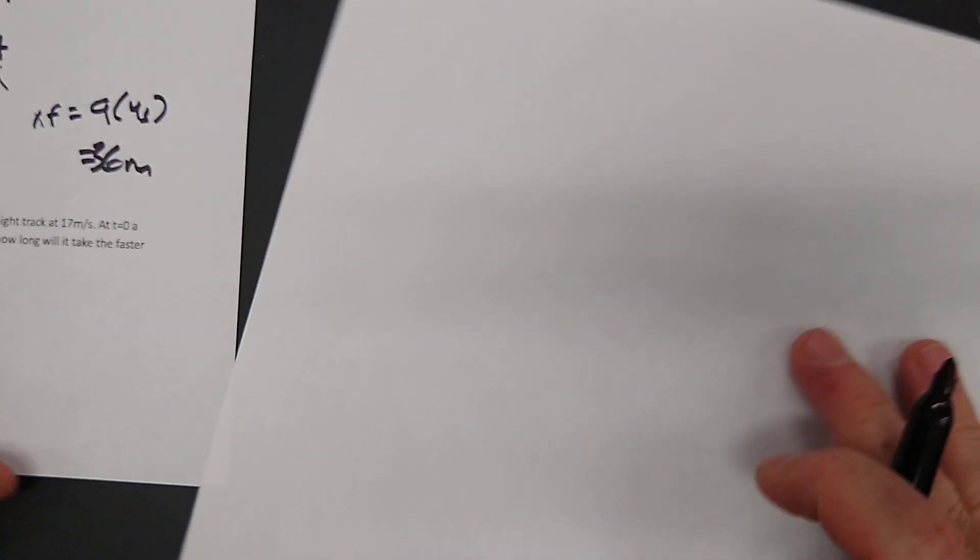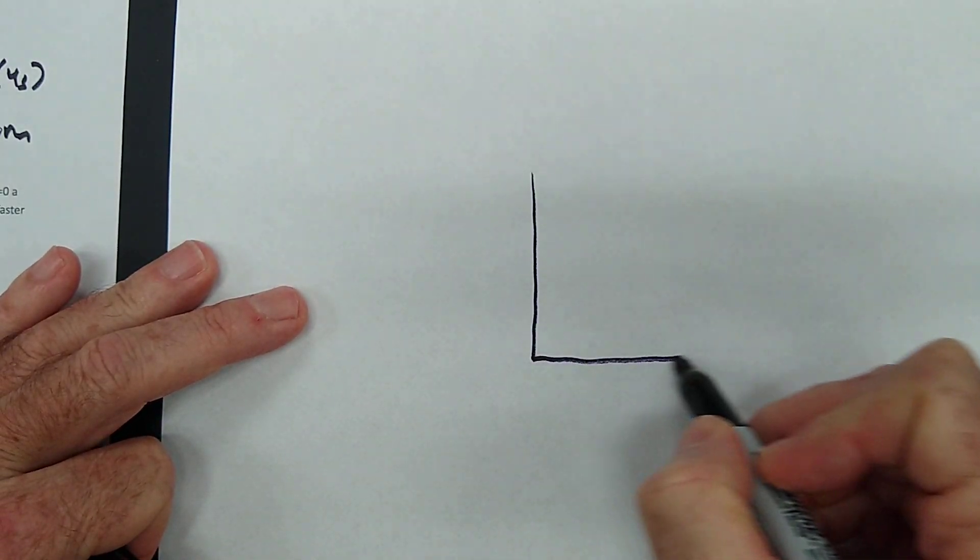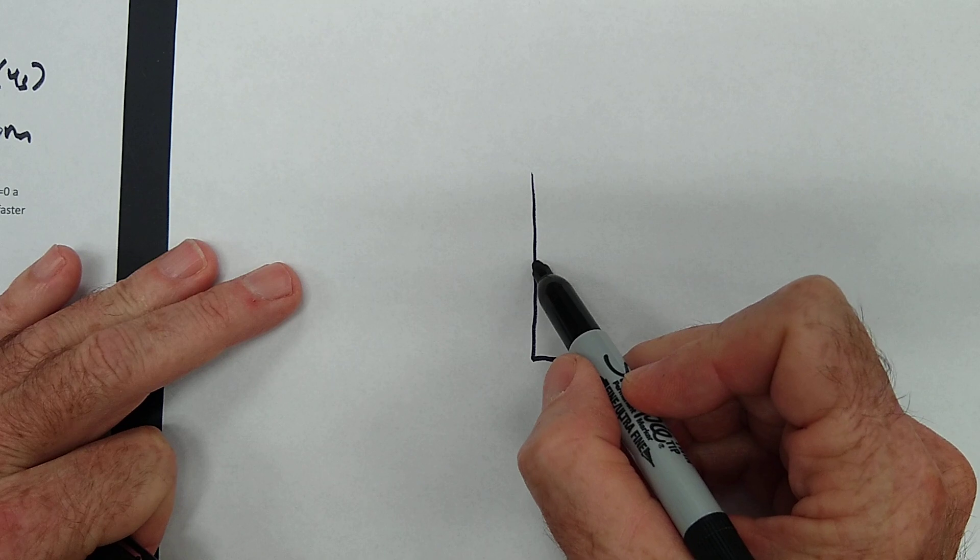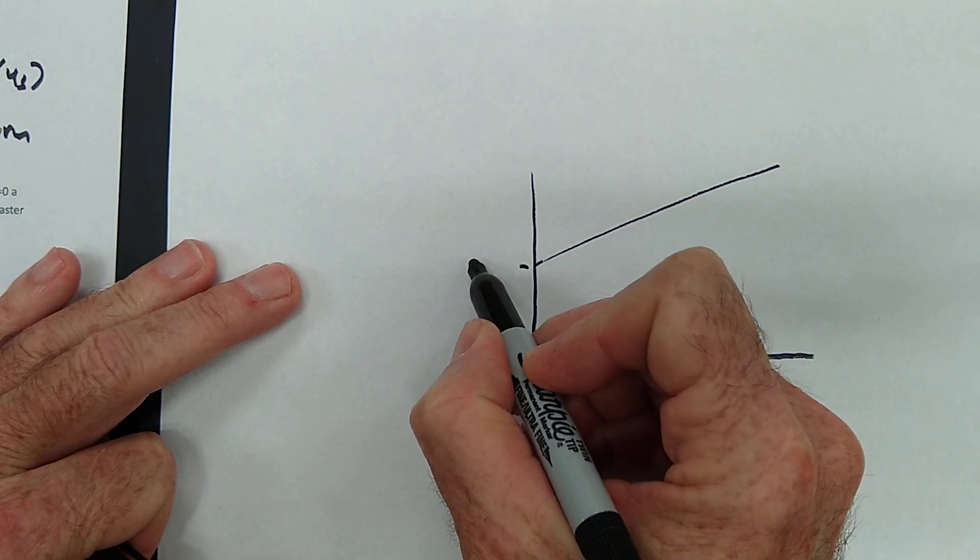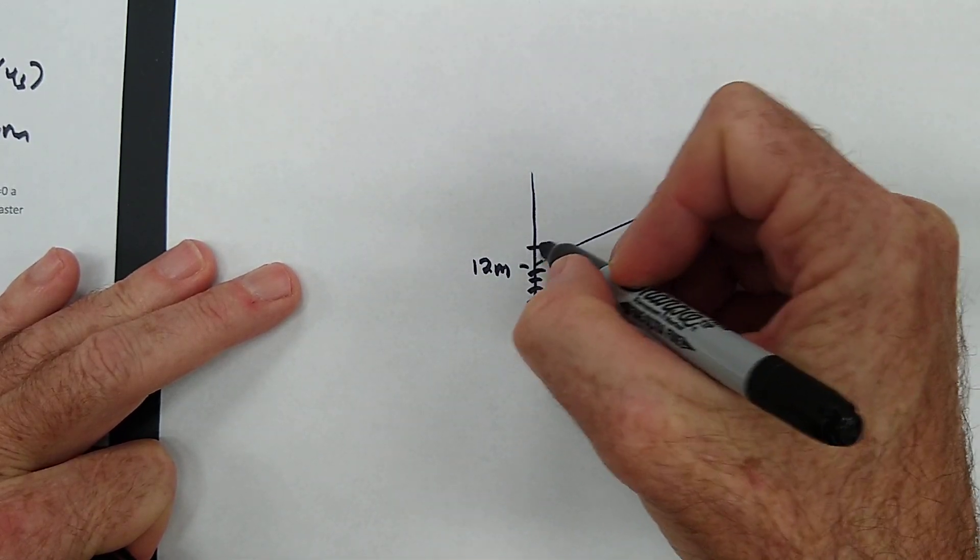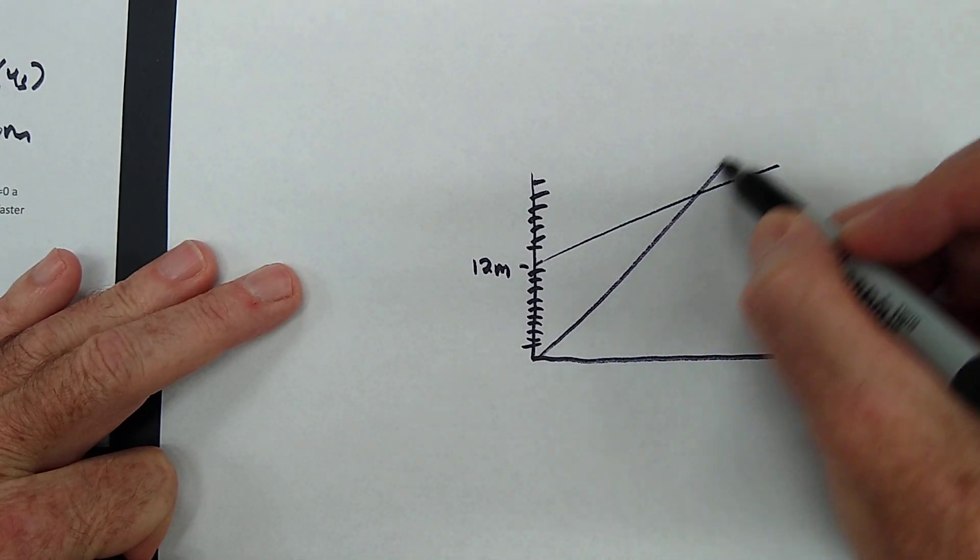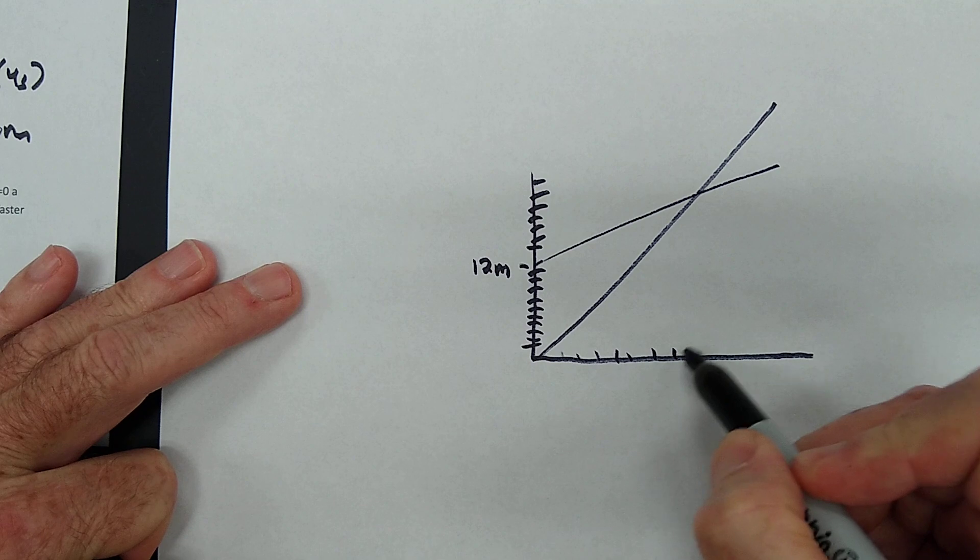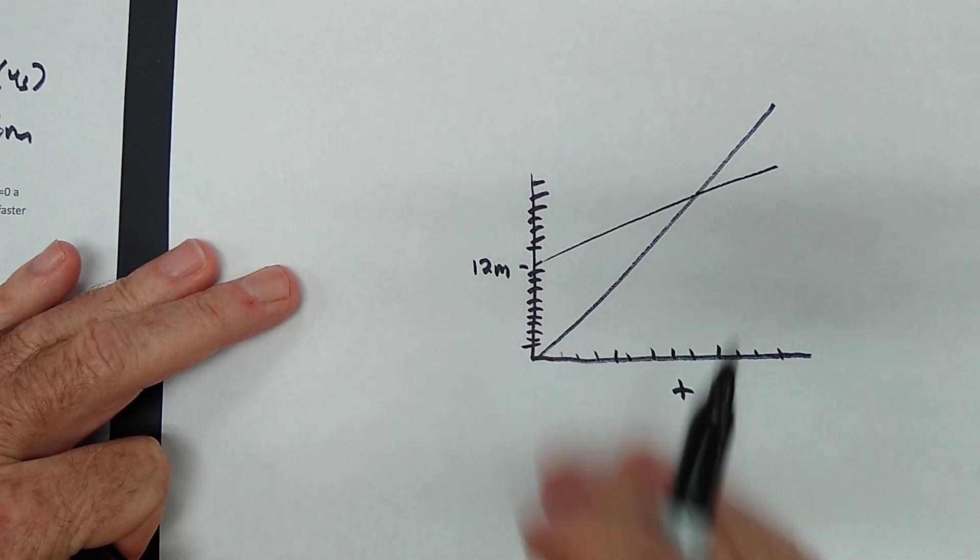Now, what does a qualitative graph of this look like? Here's a qualitative graph of number 1. One car is going at a certain speed, but it's already started 12 meters down the track. See, this is our distance on the X. And the other car is going faster, but it starts at the starting line. So here is your qualitative graph for number 1.